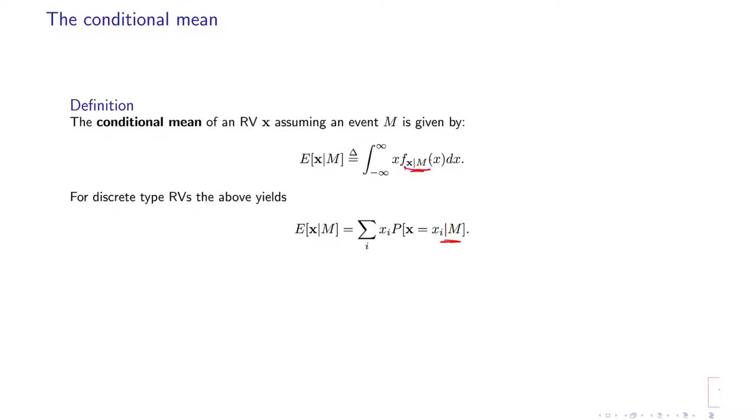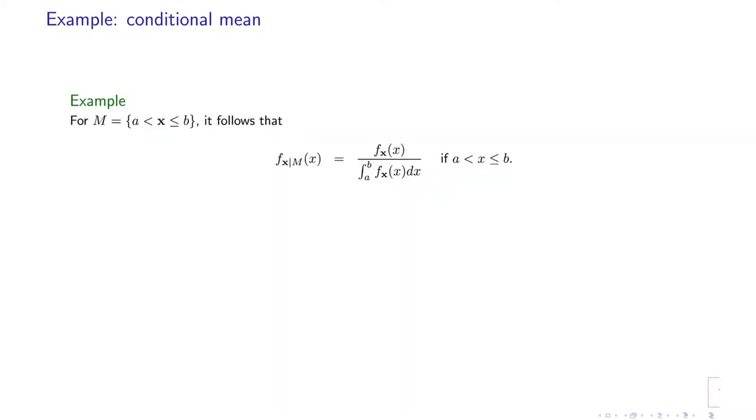If you can calculate the conditional distribution, then we need to calculate this integral or this summation. This is for discrete type random variables, but the first one applies to any distribution. So let us have one example. Suppose that event M is just an interval.